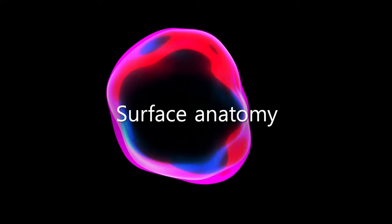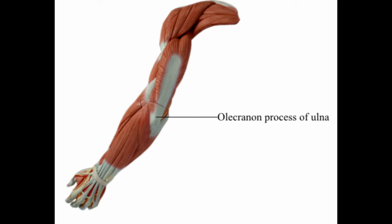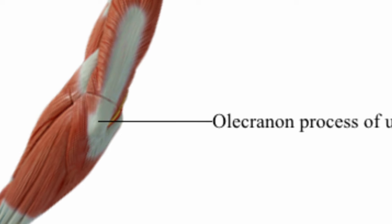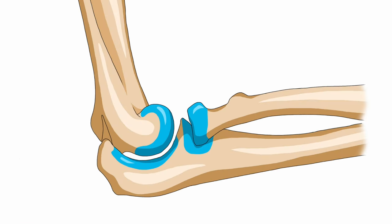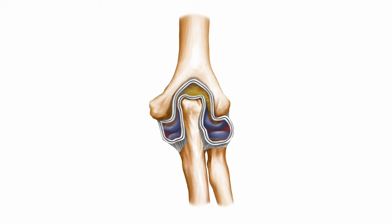Surface anatomy: the lateral and medial epicondyles, palpable as discrete bony prominences on the distal humerus, serve as important landmarks for ultrasound examination of the elbow. On the posterior aspect, the triceps brachii runs longitudinally, inserting into the olecranon process. The elbow joint is a complex hinge-pivot joint comprising three distinct articular components: the ulnohumeral, radiocapitellar, and proximal radioulnar joints. The joint capsule and collateral ligaments provide joint stability.